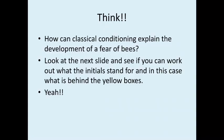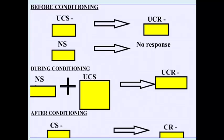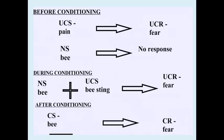Pause the video and think: how can you use classical conditioning to explain the development of a phobia of bees? You'll see some initials and yellow boxes — work out what they stand for. The answers: UCS = unconditioned stimulus, UCR = unconditioned response, NS = neutral stimulus, CS = conditioned stimulus, CR = conditioned response. The unconditioned stimulus was pain; the unconditioned response is fear caused by the sting; the neutral stimulus is the bee, because it's the sting you're actually afraid of.